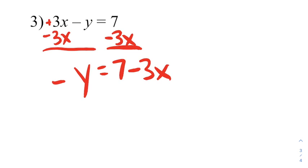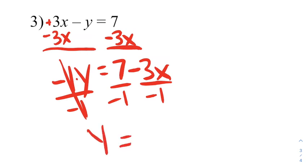Now, when you have just a negative symbol, it's really negative 1y, and if I want that y to be alone, I need to divide by that negative 1. So I'm going to do that to every term in the problem. So we're going to get this gone, y is alone, equals negative 7, negative divided by negative, positive 3x.